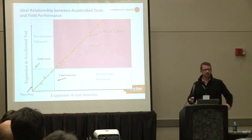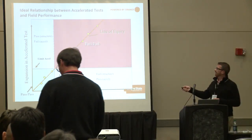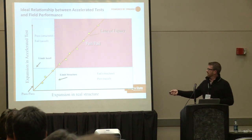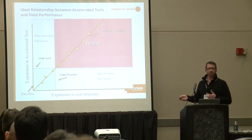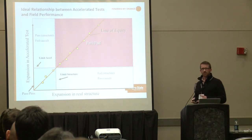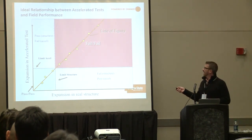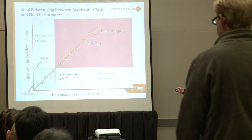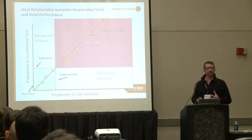Looking at an idealized graph: if we plot expansion in an accelerated test on the y-axis and expansion in a real structure on the x-axis, the ideal relationship is a line of equity. The lower-left green quadrant is pass-pass, upper-right is fail-fail — the areas where we want good agreement. If results fall in the upper-left or lower-right quadrants, we have disagreement between lab and field — those are the areas we want to avoid.